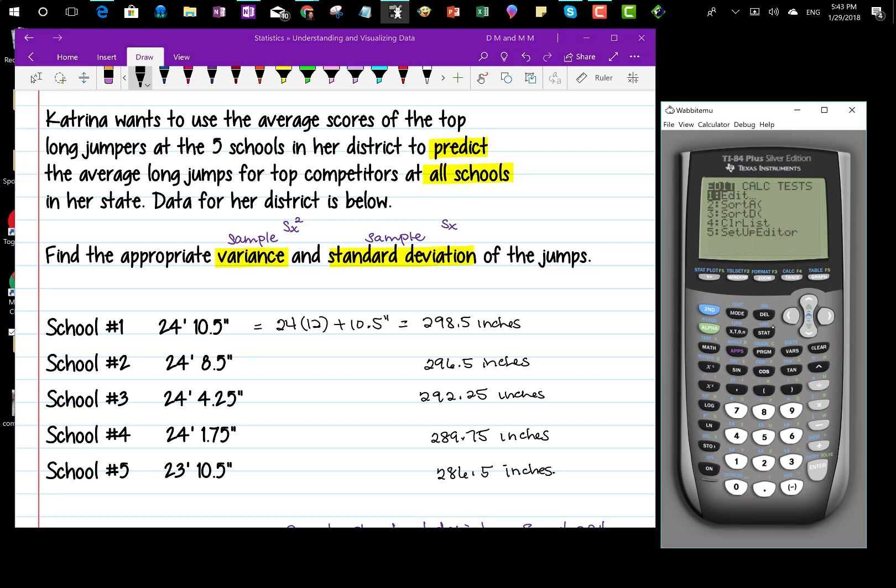I press stat, and I arrow over to calc, and I choose number one, one var stats. My list is L1, so I press second and one. If it were another numbered list, you just press second and that number. I don't have a frequency list, so I skipped that one. Now I press calculate.